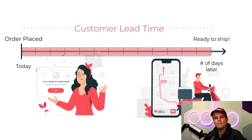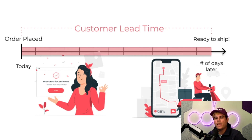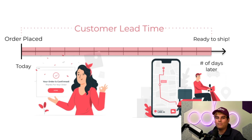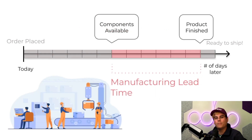Now there are lots of different types of lead times, including customer lead times — the number of days between when the product is ordered and when it's left the warehouse. Whenever we're talking about customer lead time, we're referring to the delivery lead time. And next we have manufacturing lead time, or the number of days it actually takes us to build a product.